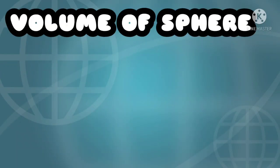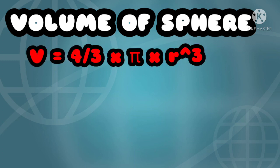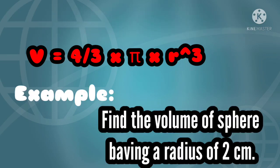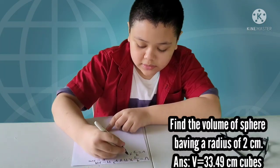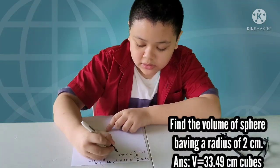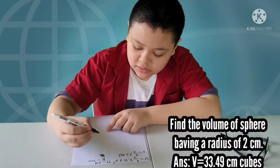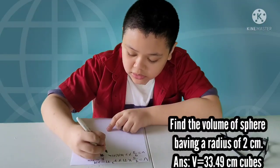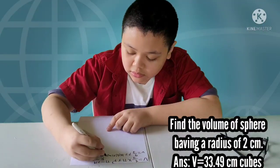Next, we have volume of sphere. To calculate the volume of a sphere, we use the formula: volume equals four-thirds times π times r³. Example: find the volume of a sphere having a radius of 2 cm. Given: four-thirds times 3.14 times 2 cm cubed.